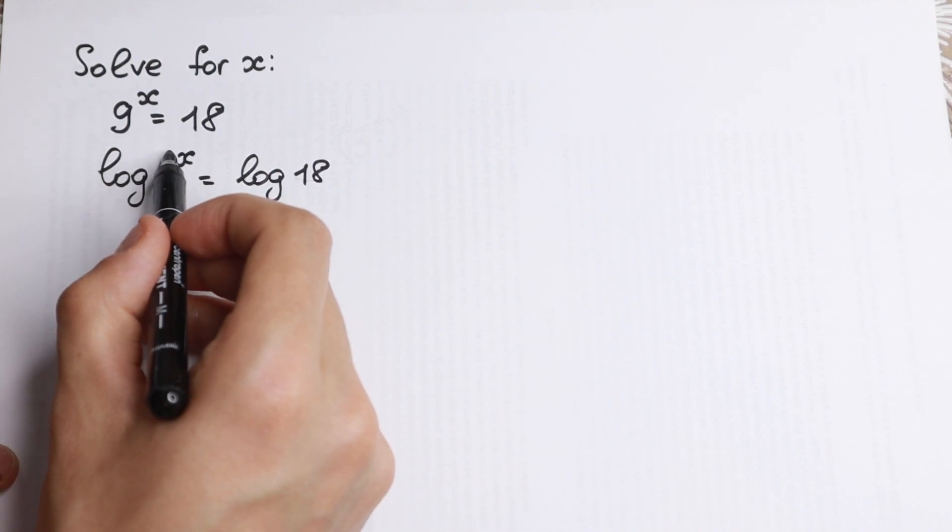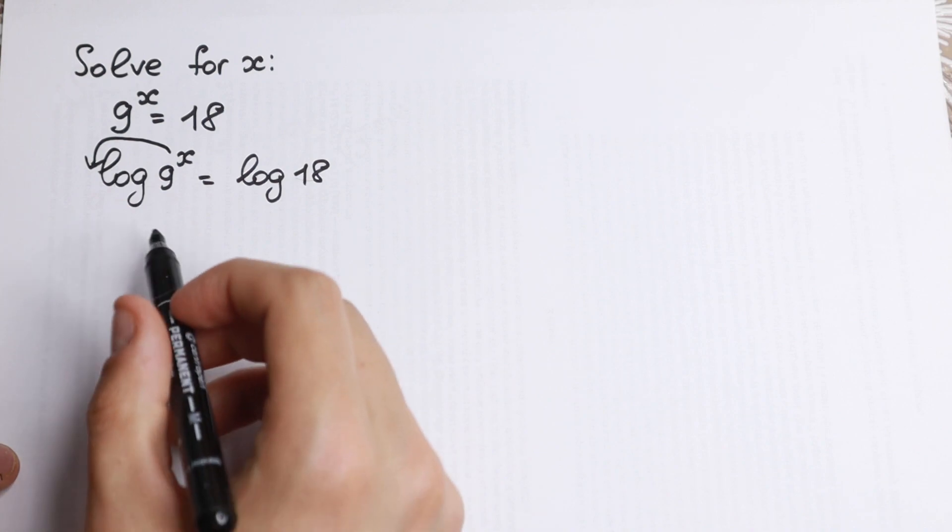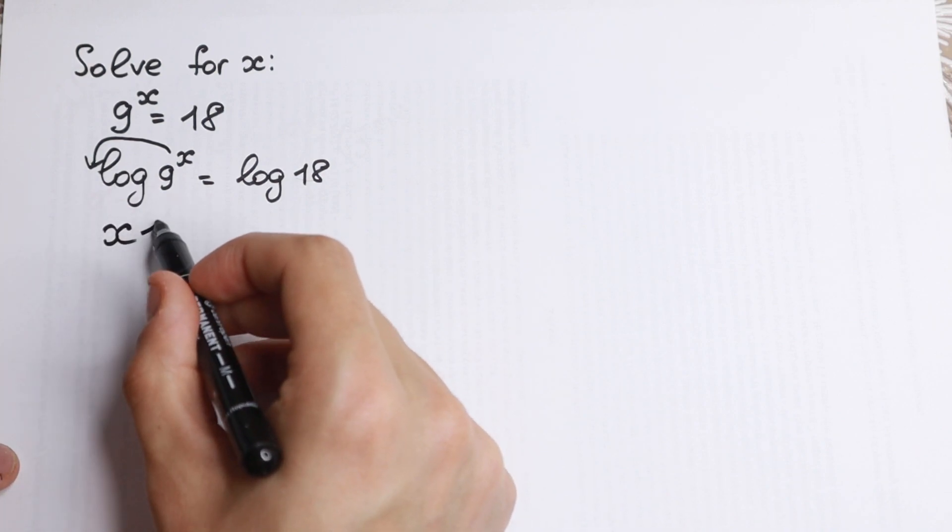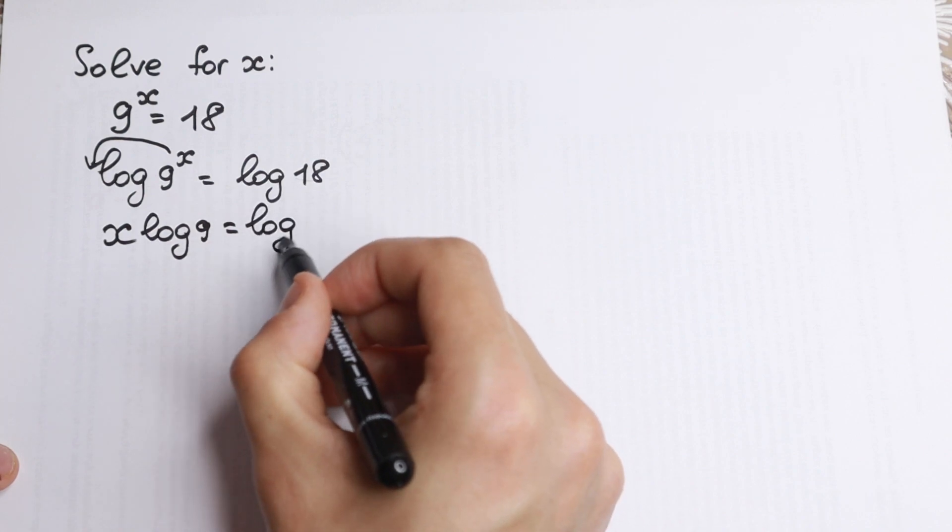Why is this good for us? Because we know a log property - this x can jump right here as a power. This x jumps right here in the beginning, so x log 9 equals log 18.